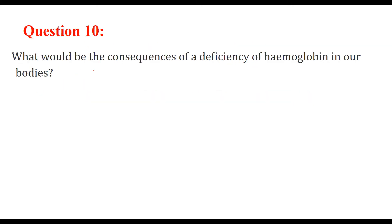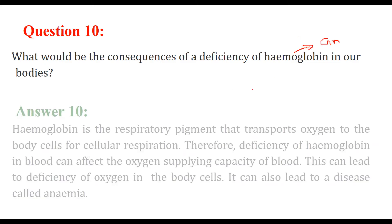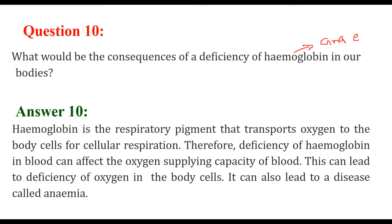What would be the consequences of a deficiency of hemoglobin in our bodies? Hemoglobin deficiency leads to anemia, which is very dangerous. Hemoglobin is basically a respiratory pigment that transports oxygen to the body cells for cellular respiration. Every cell needs to respire, and hemoglobin transports that oxygen. If there is a deficiency of hemoglobin in the blood, it affects the oxygen-supplying capacity of blood, leading to the disease anemia.